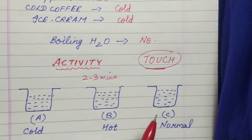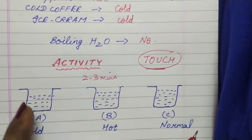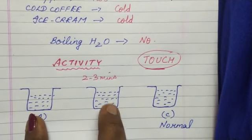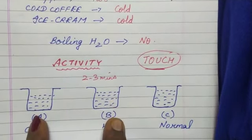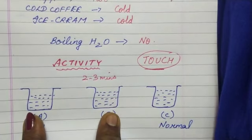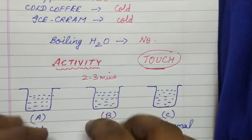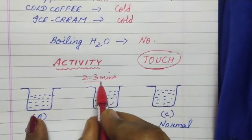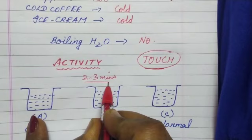Now you will put your left hand inside the container which is having cold water and right hand in container B which is having hot water simultaneously. Simultaneously means together you have to put. And for how long will you put? You will put it for two to three minutes, both your hands.